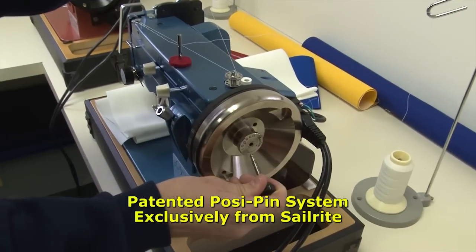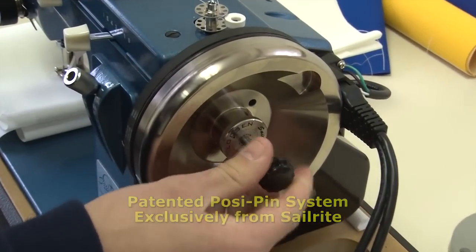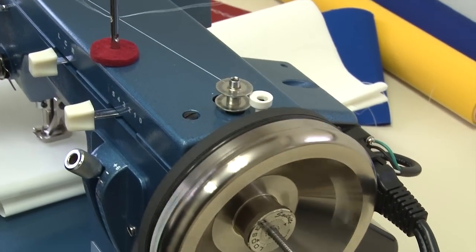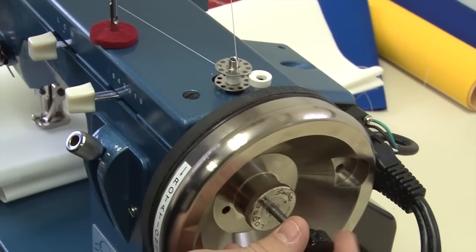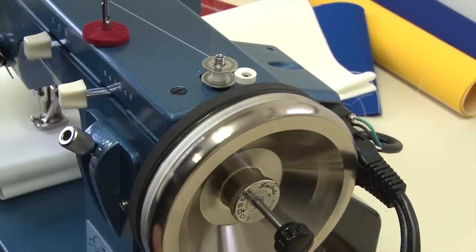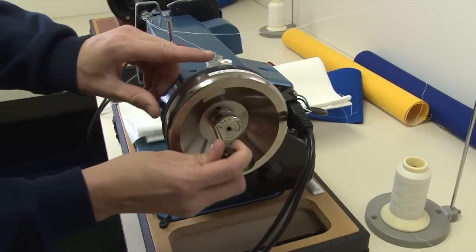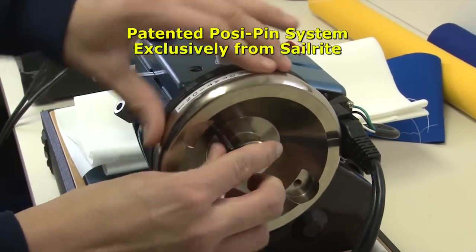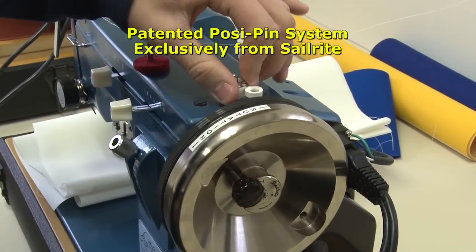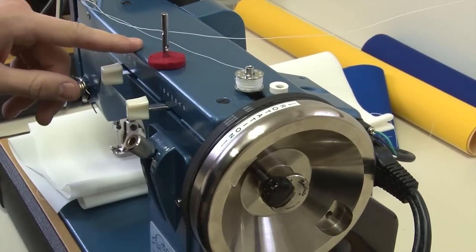All of the current Ultrafeed sewing machines include the patented PosiPen system. Remove the PosiPen from the balance wheel, stick it in the keeper and you can wind bobbins without the needle moving up and down, it disengages the needle drive. When you're done winding bobbins, remove the PosiPen from the keeper, put it in the balance wheel, rotate the balance wheel until it finds a hole in the shaft and you're ready to sew again.